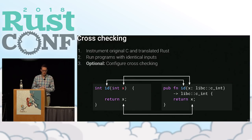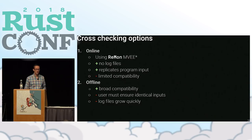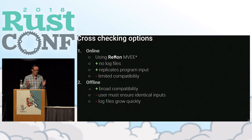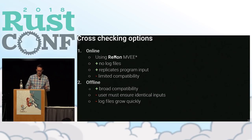This gets more complex once functions are non-trivial. You have two options for cross-checking: one is to do it online using something called an MVE — think of it as a way to execute two processes side by side and make sure they get the same input, without having to do any logging. However, it has some compatibility drawbacks, and you can't necessarily run something as complex as a web browser through it. If you can't use an MVE, you have the option of offline checking where we log the program behavior to two log files, avoiding some of the MVE compatibility issues.